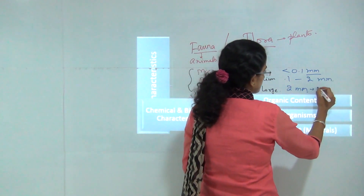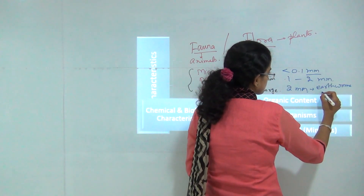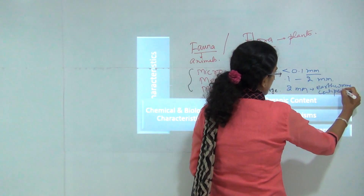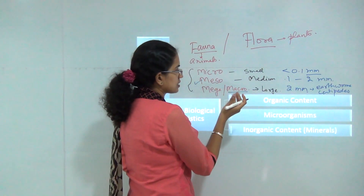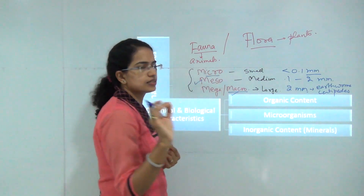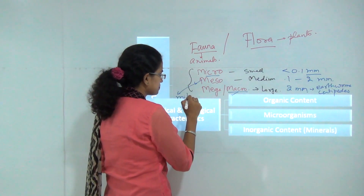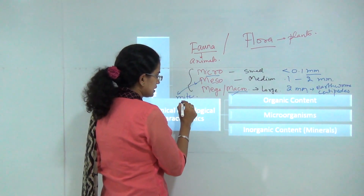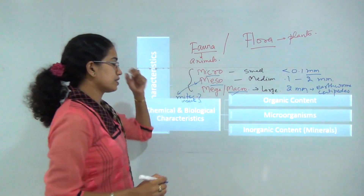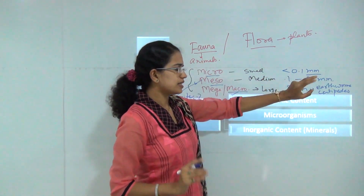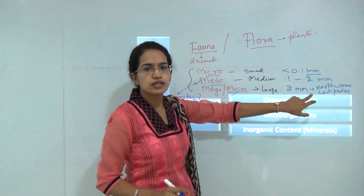Macro fauna usually includes small insects like earthworms, centipedes, slugs, and so on — larger than 2 mm. To summarize: micro fauna technically includes bacterial growth, meso fauna includes growth of mites and very small visible insects, and macro fauna includes larger organisms. These categories are demarcated on the basis of size: less than 0.1 mm, 0.1 to 2 mm, and more than 2 mm.